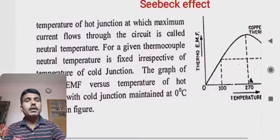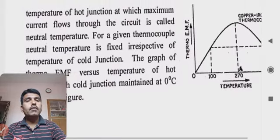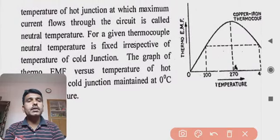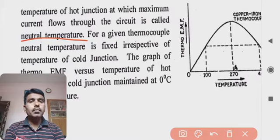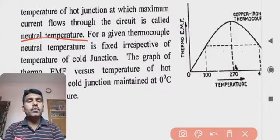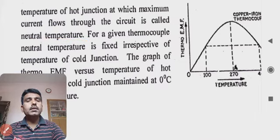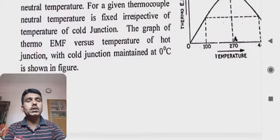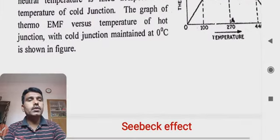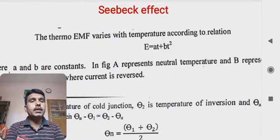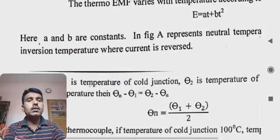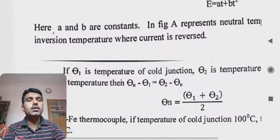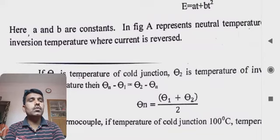A graph showing thermo-EMF versus temperature of the hot junction, with the cold junction maintained at 0°C, demonstrates this behavior. The thermo-EMF varies with temperature according to the relation E = AT + BT², where A and B are constants. A represents the neutral temperature and B represents the inversion temperature where current reverses.